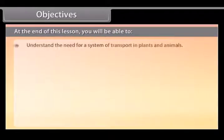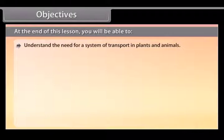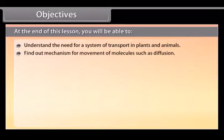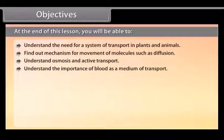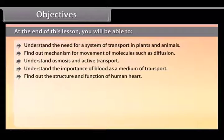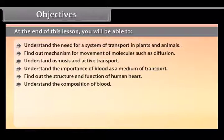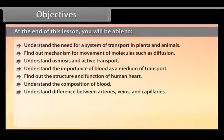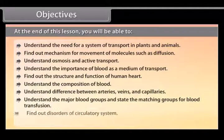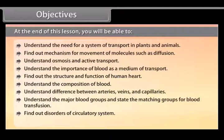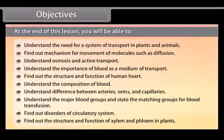Objectives. At the end of this lesson, you will be able to understand the need for a system of transport in plants and animals. Find out mechanism for movement of molecules such as diffusion. Understand osmosis and active transport. Understand the importance of blood as a medium of transport. Find out the structure and function of human heart. Understand the composition of blood. Understand the difference between arteries, veins and capillaries. Understand the major blood groups and state the matching groups for blood transfusion. Find out disorders of circulatory system. Find out the structure and function of xylem and phloem in plants.